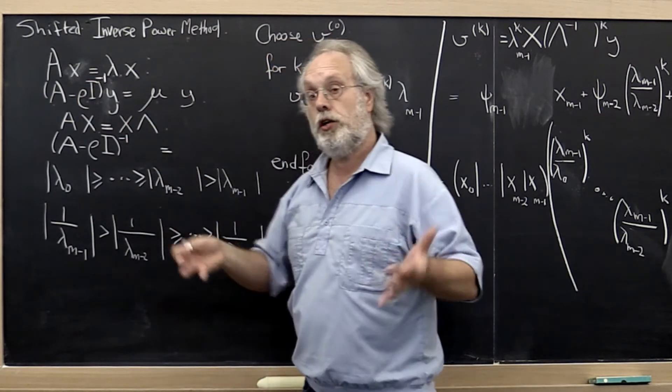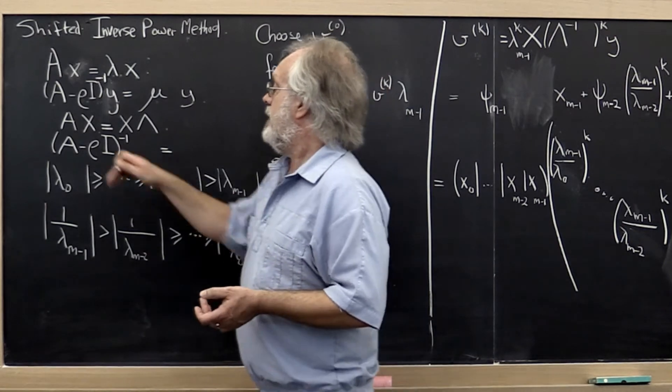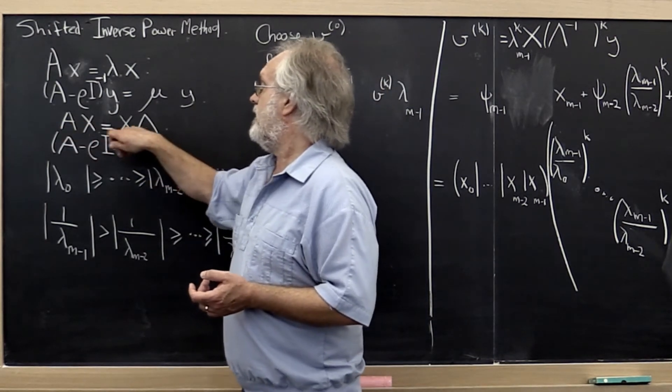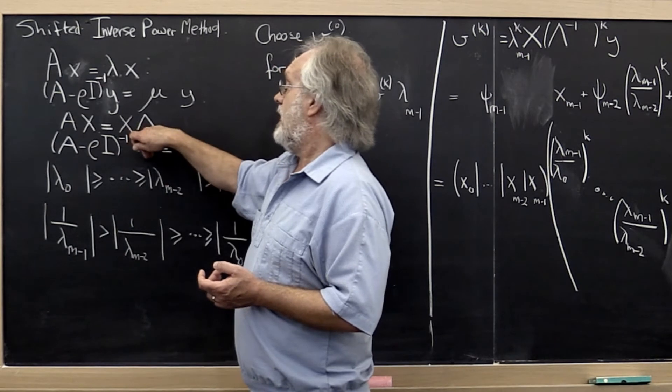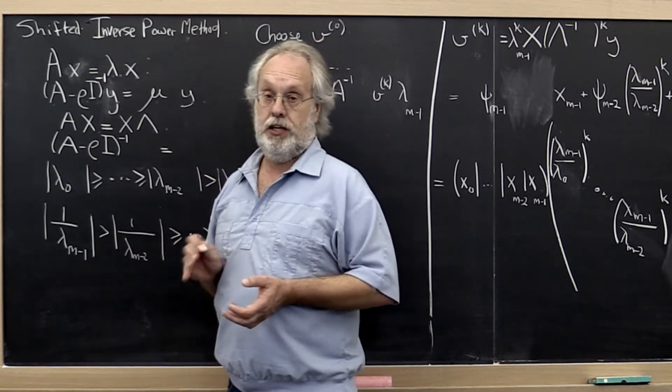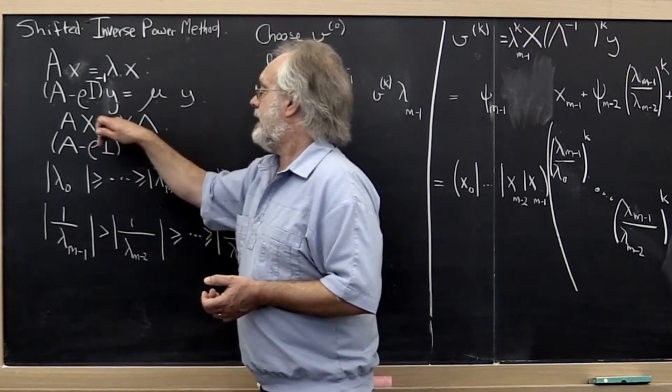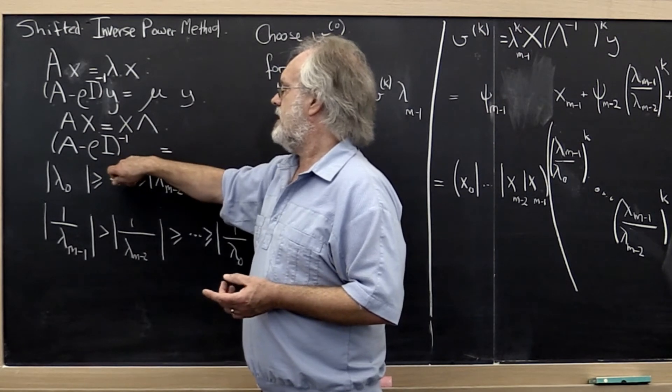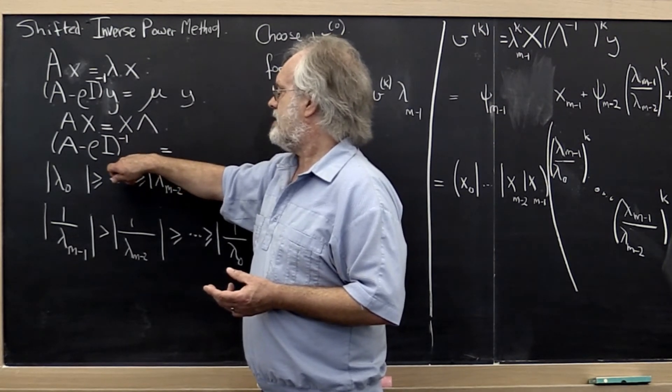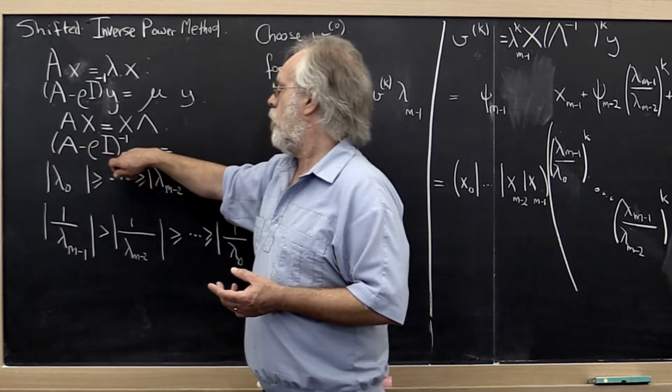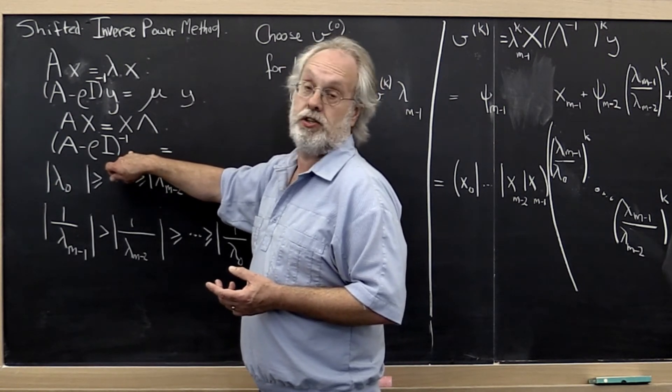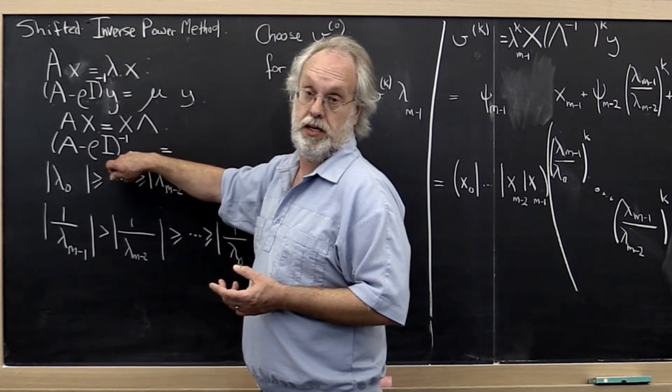And you're also going to look at the question of if I know x and lambda such that A times x equals x times lambda, lambda being a diagonal matrix, can I somehow gain some insight into the x and lambda that come up when we diagonalize the shifted matrix or rather the inverse of the shifted matrix.